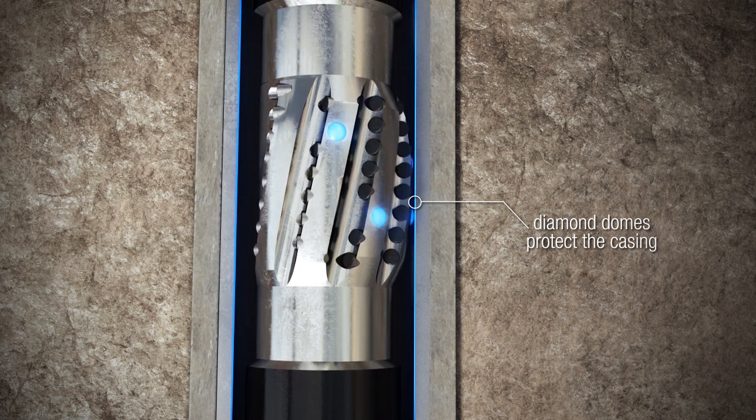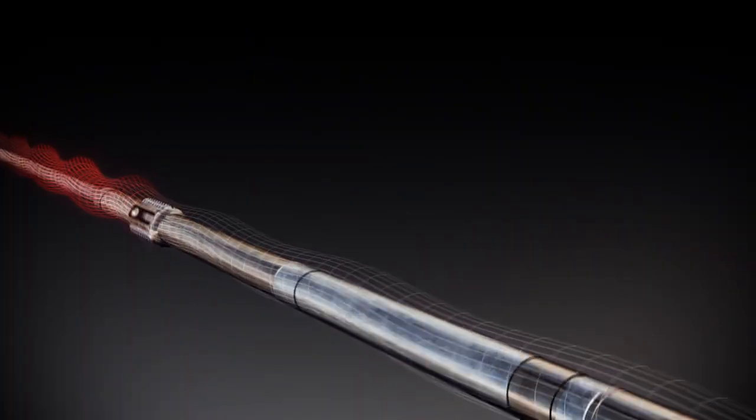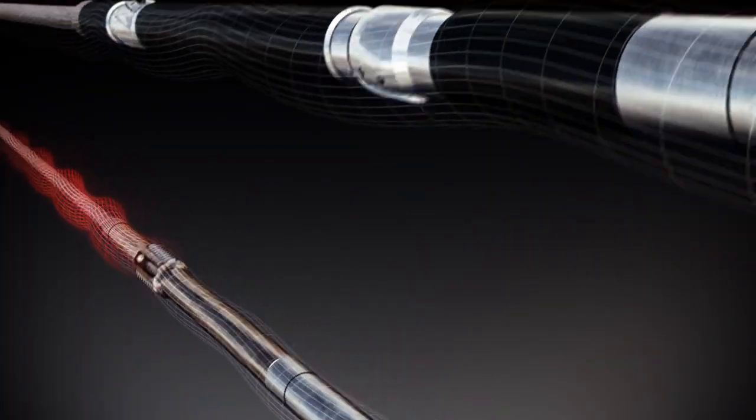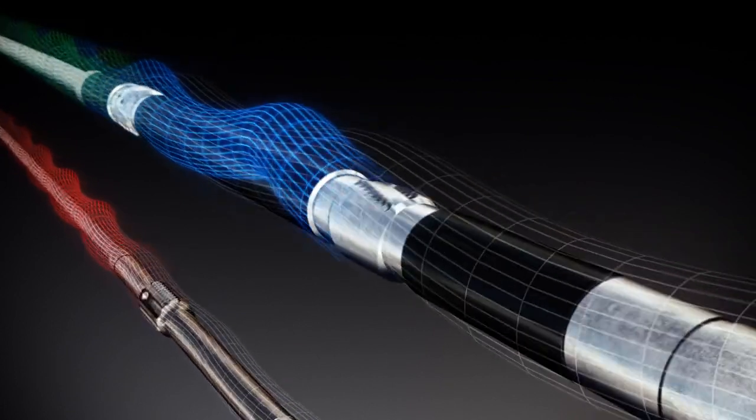You can immediately see its benefits over traditional reamers. Instead of simply following the spiraling path of the bit, Drill-N-Ream's patented dual reaming eccentric design forces the drift wider.